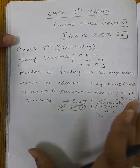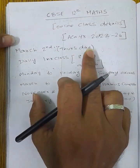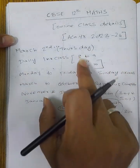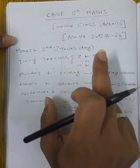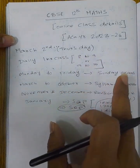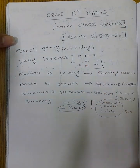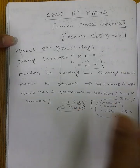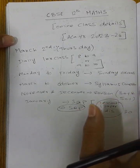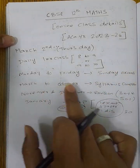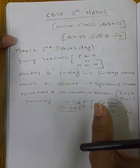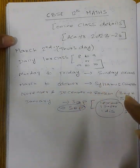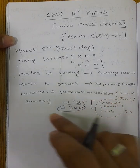Total schedule: Classes are March to October, Monday to Friday. Every Sunday exam. Daily one hour classes. Saturday is preparation time. Syllabus completion by October. November and December: 30% revision, exams. January: board exam pattern and sample questions.